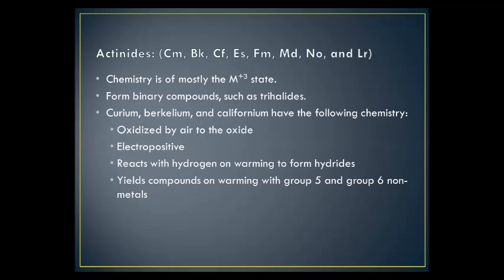The later actinides — Cm, Bk, Cf, Es, Fm, Md, No, and Lr — have chemistry that is mostly in the M³⁺ state. They all form binary compounds such as trihalides. Curium, berkelium, and californium share the following chemistry: oxidized by air to the oxide, electropositive, react with hydrogen on warming to form hydrides, and yield compounds on warming with group 5 and group 6 non-metals.